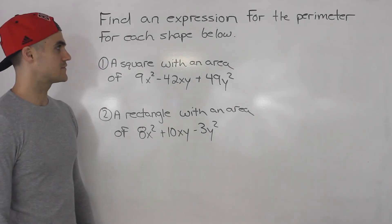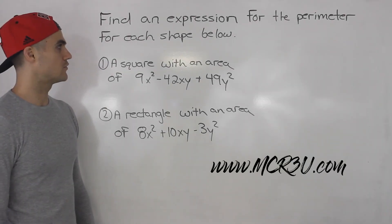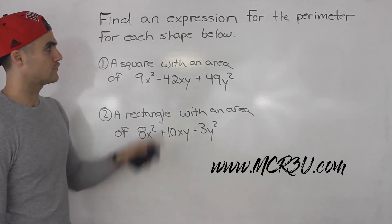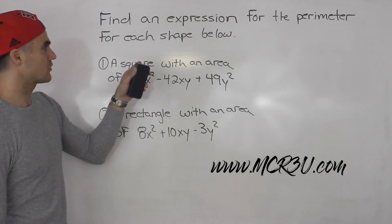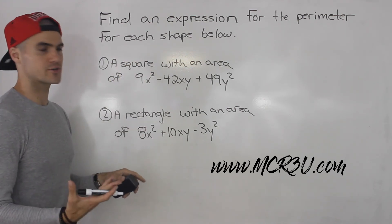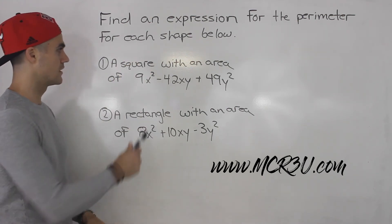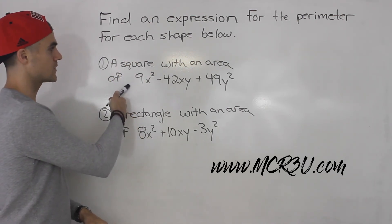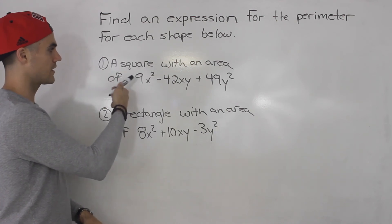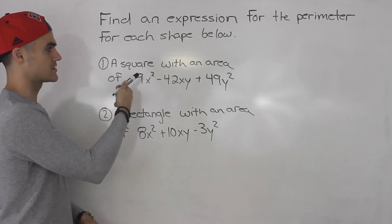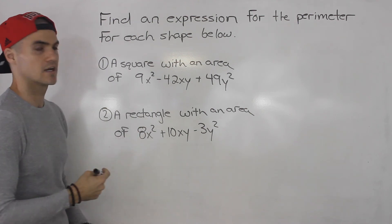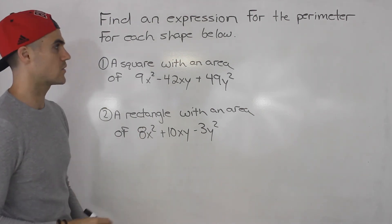Welcome back. In this video we're moving on with factoring and we have to find an expression for the perimeter for each shape below. So we've got two questions to deal with. The first question: we have a square with an area of 9x squared minus 42xy plus 49y squared.